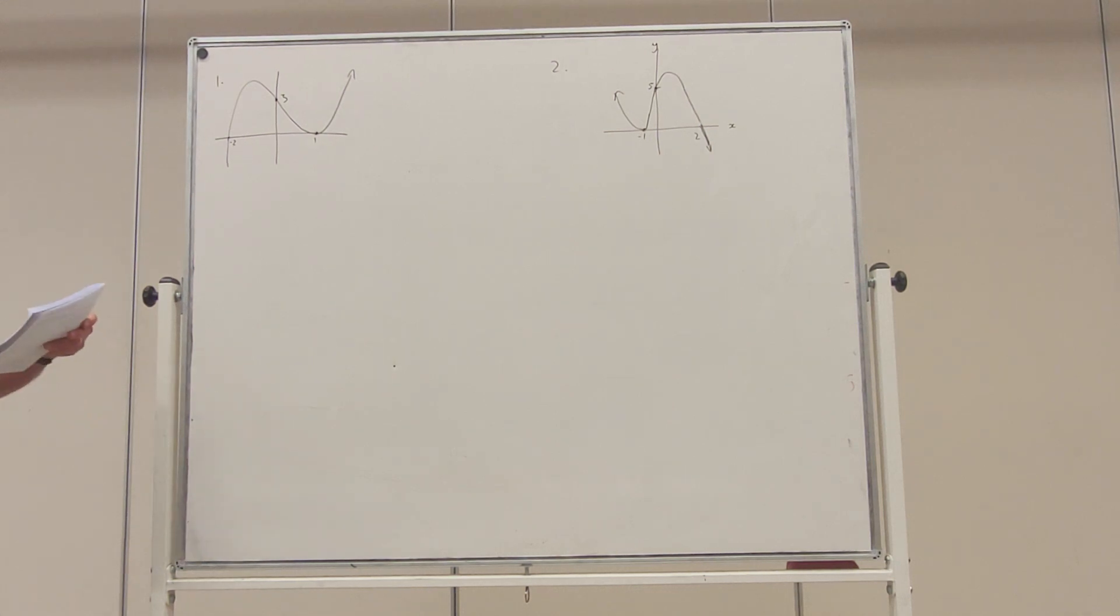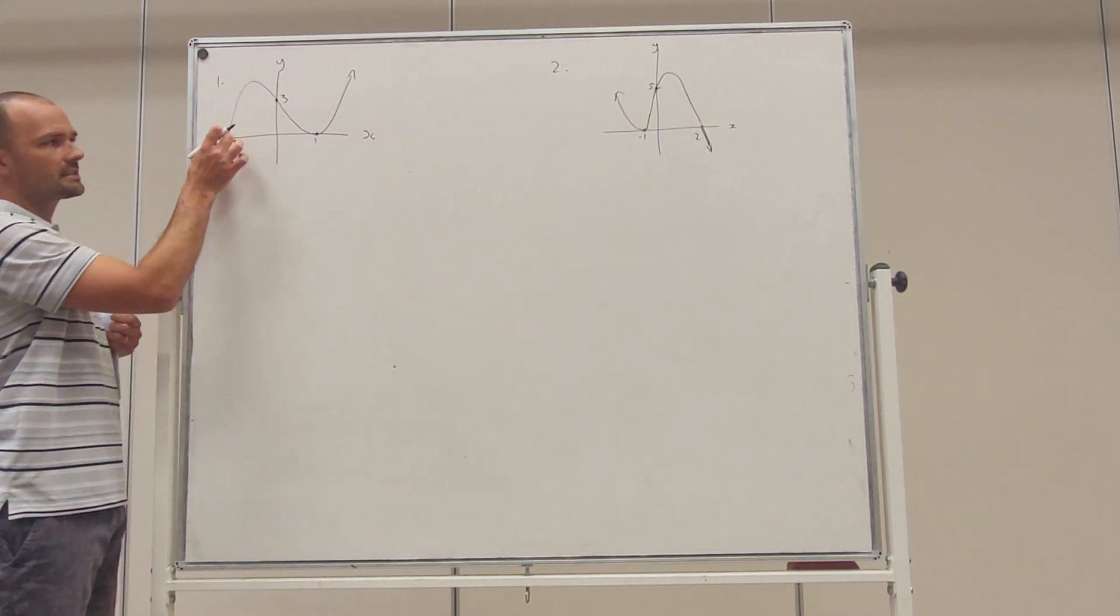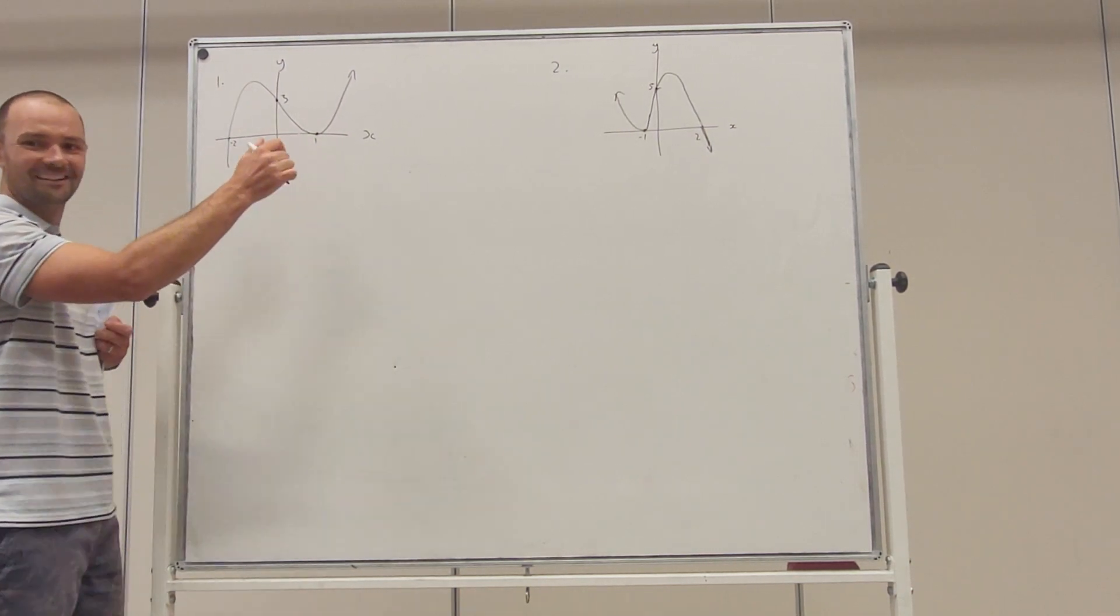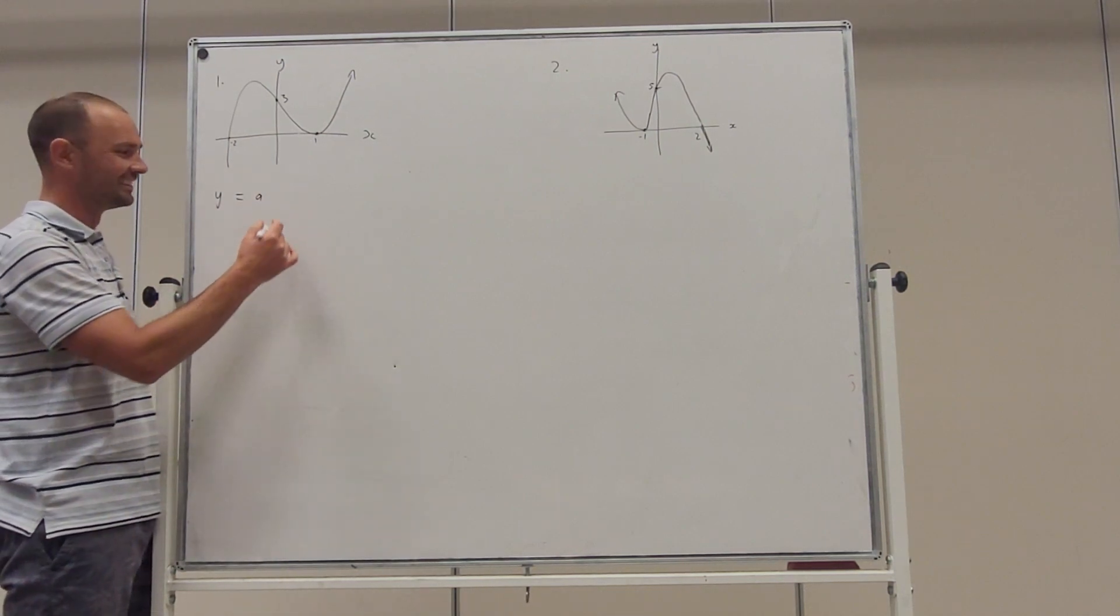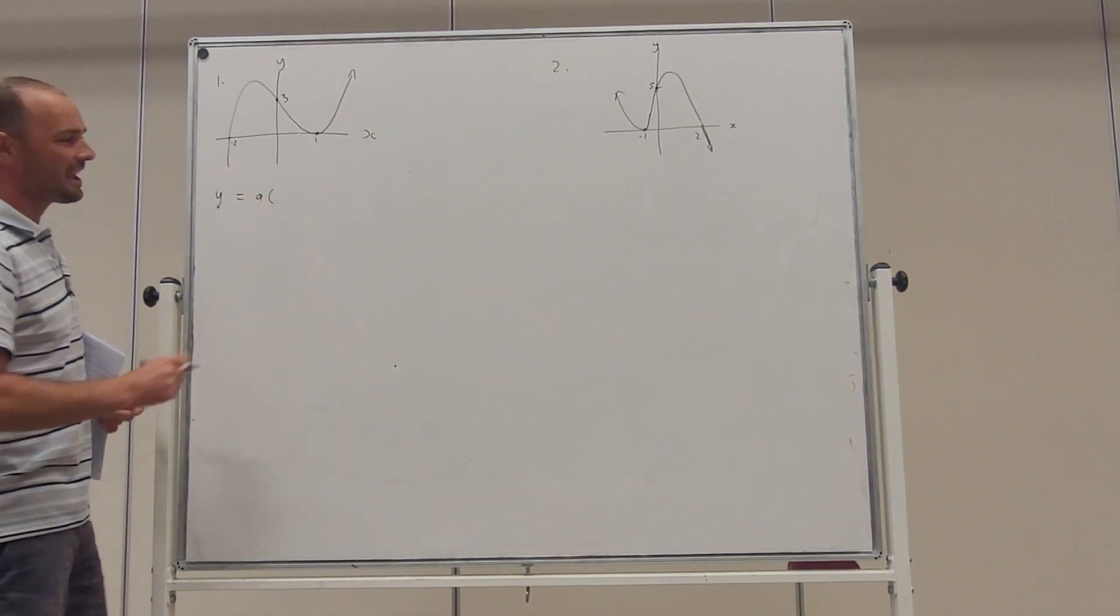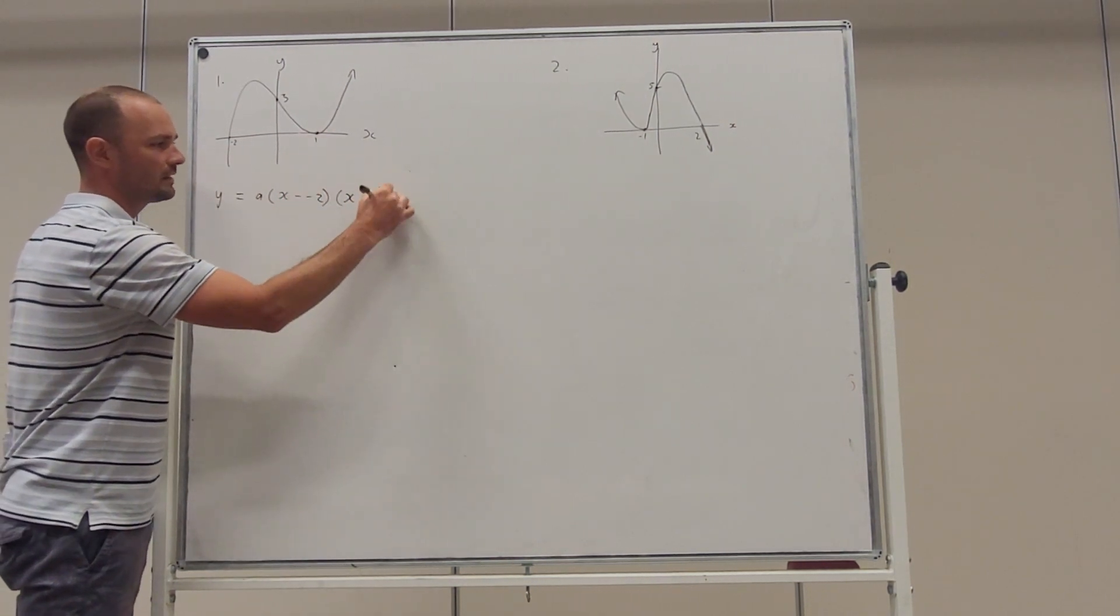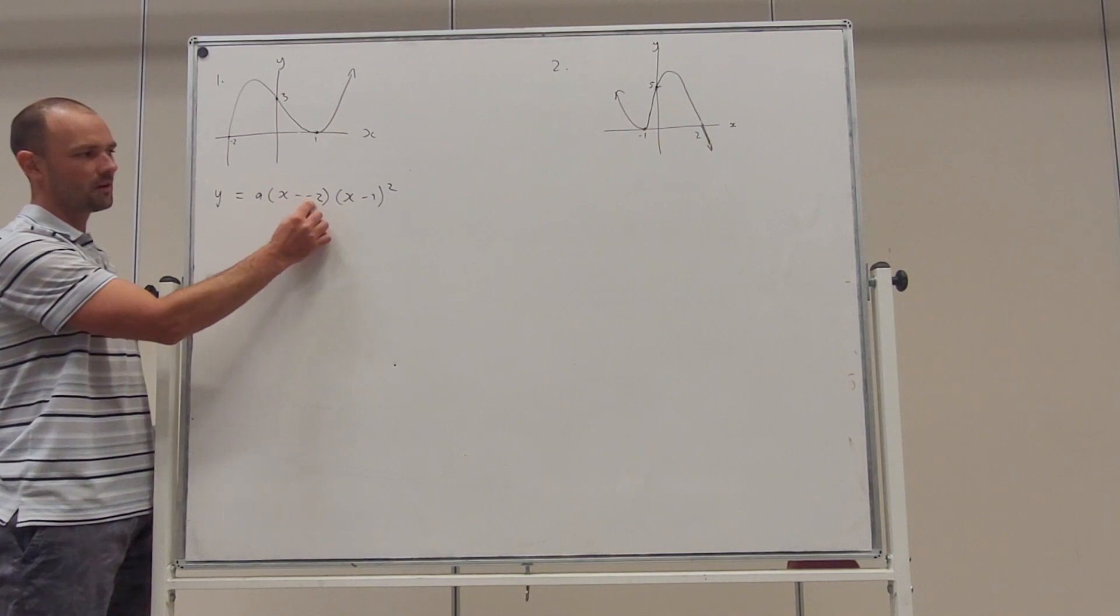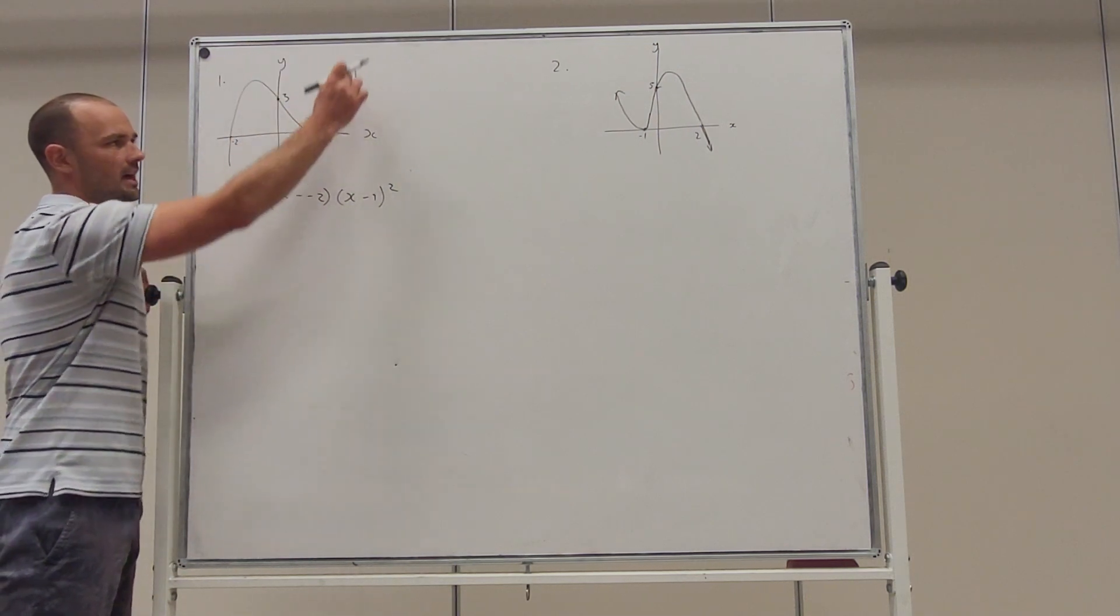We can see from this graph that it cuts the x-axis at minus two and touches at x is one. That means it's going to have the form x take minus two and x take one squared. X take minus two - take away the root, that's a factor - and x take one squared because it touches at that point.